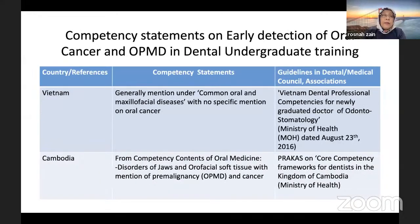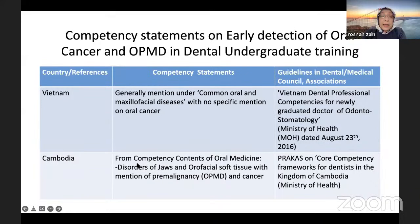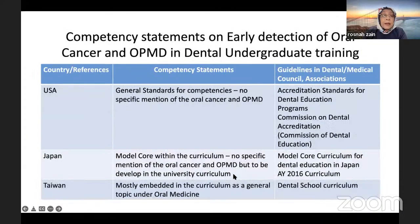In Malaysia, there is also a general mention under skills of distinguishing signs and symptoms of oral and facial diseases, with a minimum competency under oral medicine. In Vietnam, my colleague extracted that there is generally a mention under common oral and maxillofacial diseases with no specific mention of oral cancer, so all schools put it into their curriculum. In Cambodia, from the core competency frameworks for dentists in the Kingdom of Cambodia — the Prakas — there are areas that mention disorders of jaws and orofacial soft tissue with a mention of pre-malignancy and oral cancer.